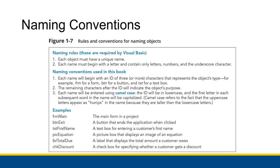Now here are some naming conventions. Some are actually enforced by Visual Basic — if you don't follow those rules, bad things are going to happen. Some are the naming conventions used in the book and in this class. The rules you actually have to follow: each object must have a unique name, so you can't repeat names. Each name must begin with a letter, and can only contain letters (uppercase or lowercase), numbers, and the underscore character. No special symbols — just letters, numbers, and the underscore.